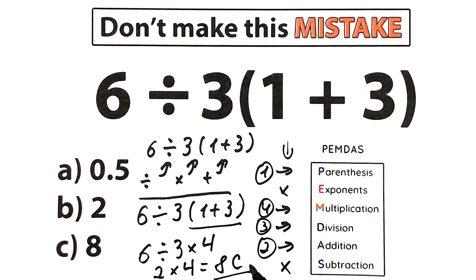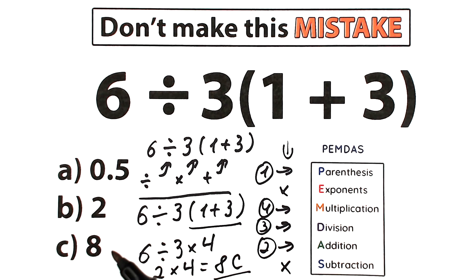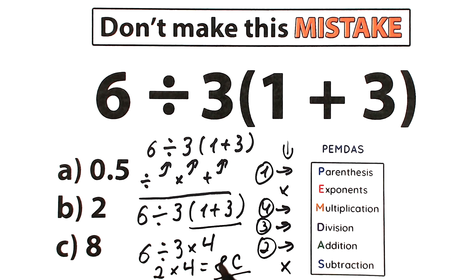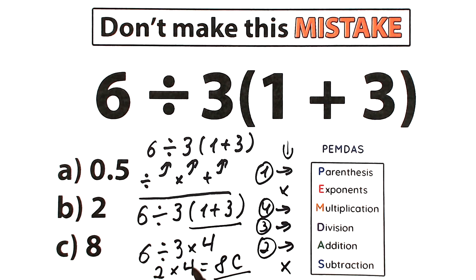A lot of students argue about the correct answer because if we start with division we get one answer, and if we start with multiplication we get another. But in terms of math, it's really bad to solve challenges randomly. We should know the correct order. So in our case, we solved according to PEMDAS: first we found the parentheses — inside we have 1 plus 3, which equals 4. Second step, the first sign from left to right is division: 6 divided by 3 equals 2. Last step is multiplication: 2 times 4 equals 8. Option C is the correct answer.